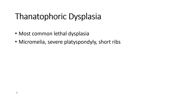Thanatophoric dysplasia — the most common lethal dysplasia — features micromelia, macrocephaly, and severe platyspondyly with short ribs.